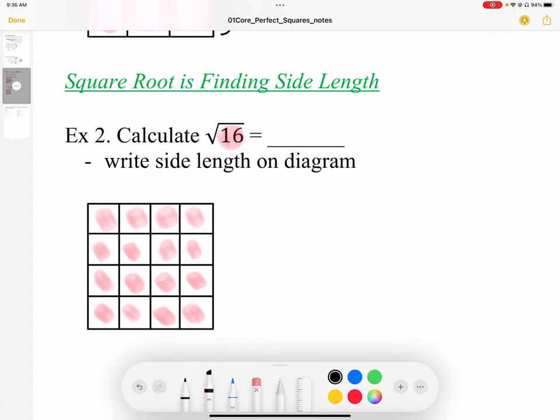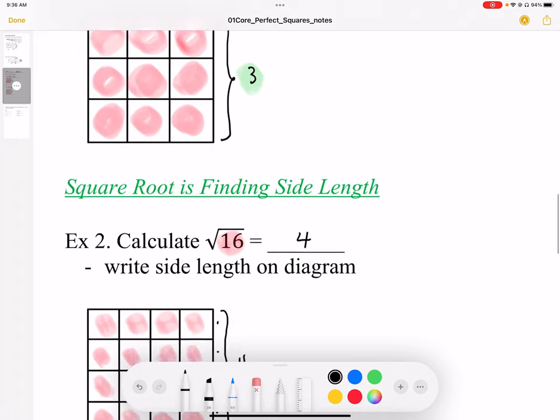The square root of 16 is equal to a side length of 4. This is equal to 4, and the 4 shows up on the edge. I can count 1, 2, 3, 4 along the edge length. So I'm counting edges or length when I find the square root. When I do squares, I'm counting squares or counting the areas.